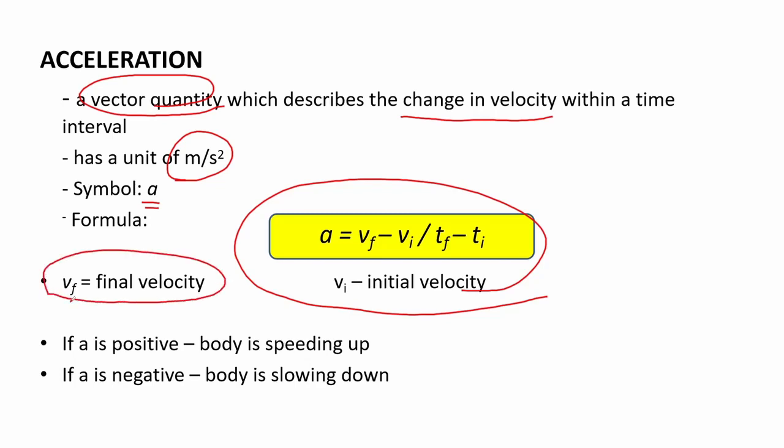Based on the equation, if the object speeds up it would generate a positive acceleration and if it slows down it would be negative acceleration. So if the object moves at constant velocity then its acceleration is 0.